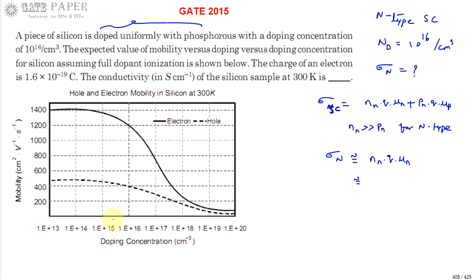The number of electrons is produced by the pentavalent atoms — each pentavalent atom gives one electron. Since the doping concentration is 10^16 per cm³, per unit volume we add 10^16 pentavalent atoms, giving at most 10^16 extra electrons. Full dopant ionization is taking place, meaning all pentavalent atoms donate one electron each. Therefore nn = ND = 10^16, and σn = ND·q·μn.